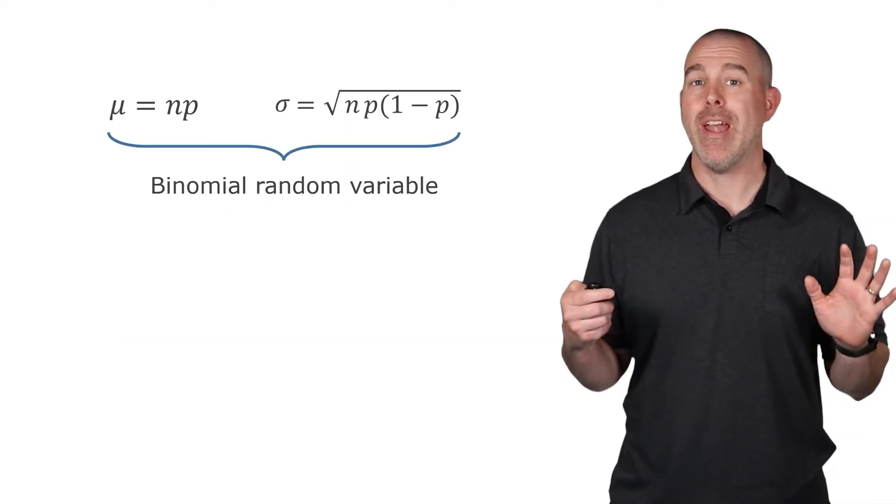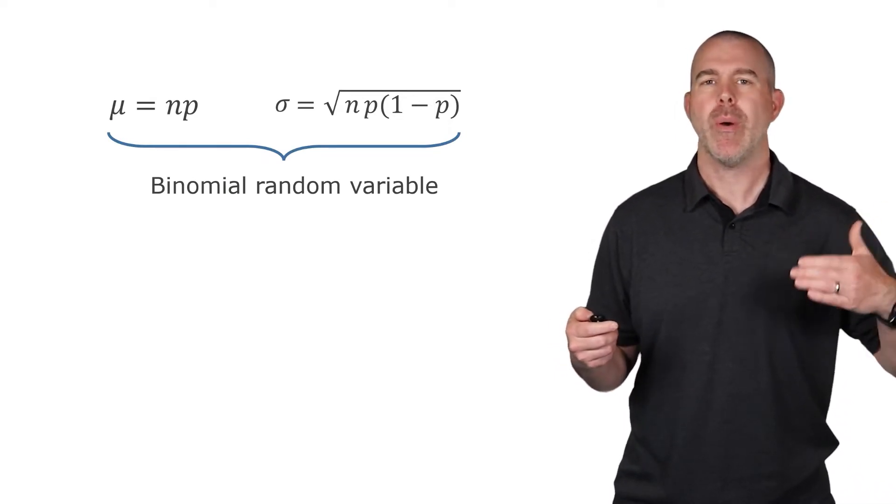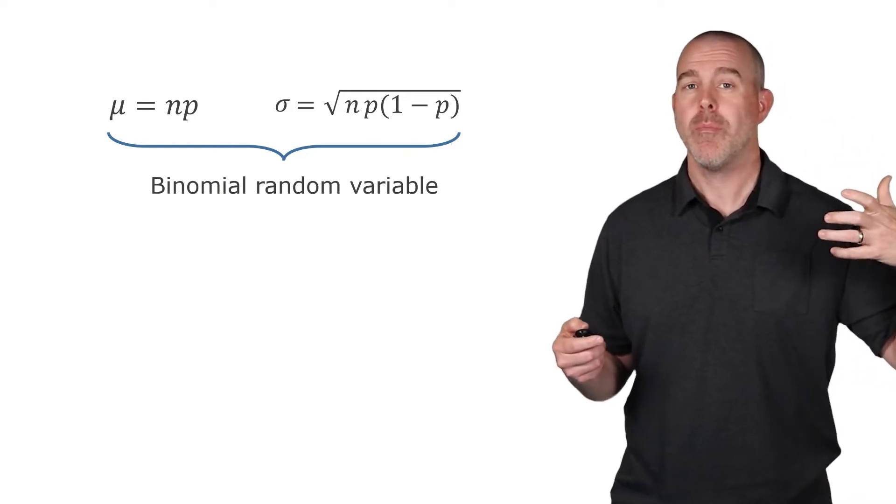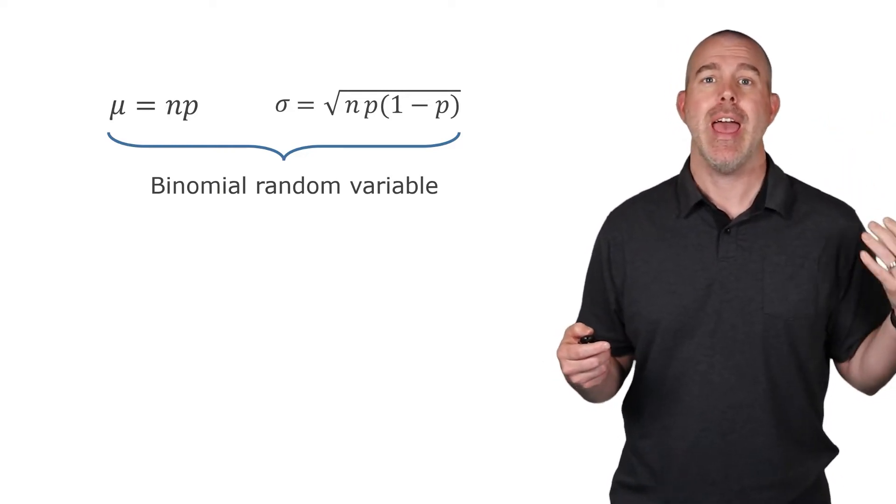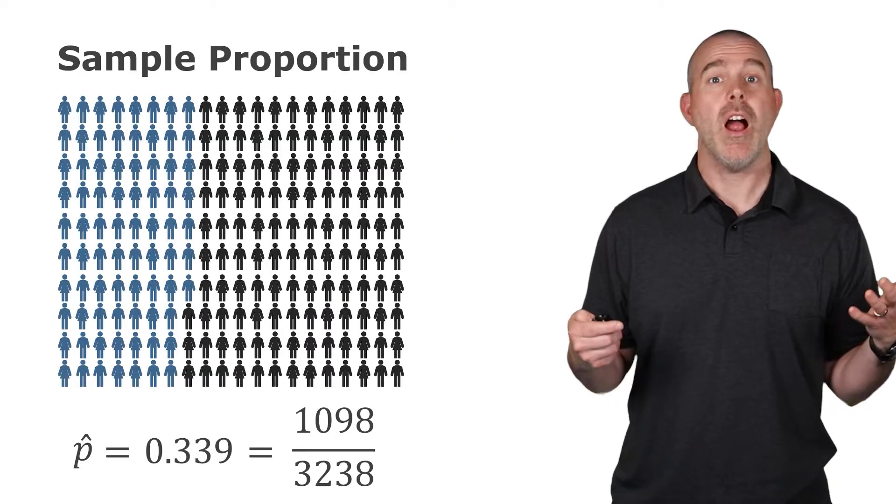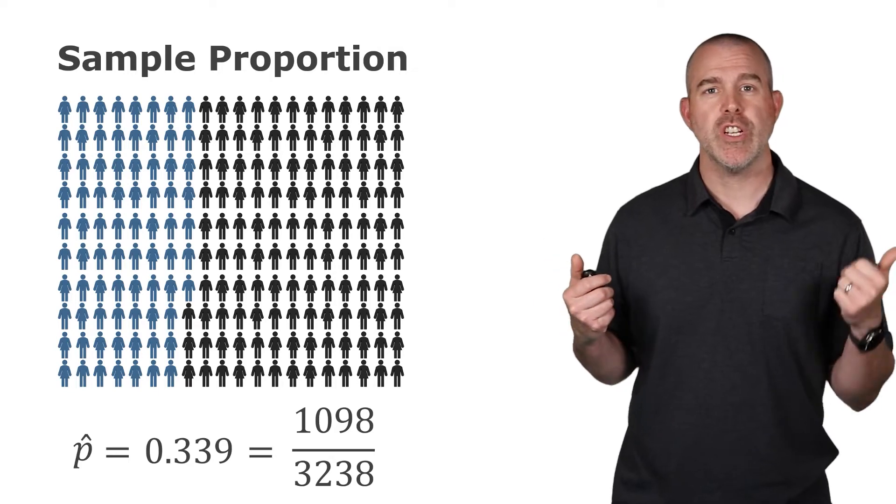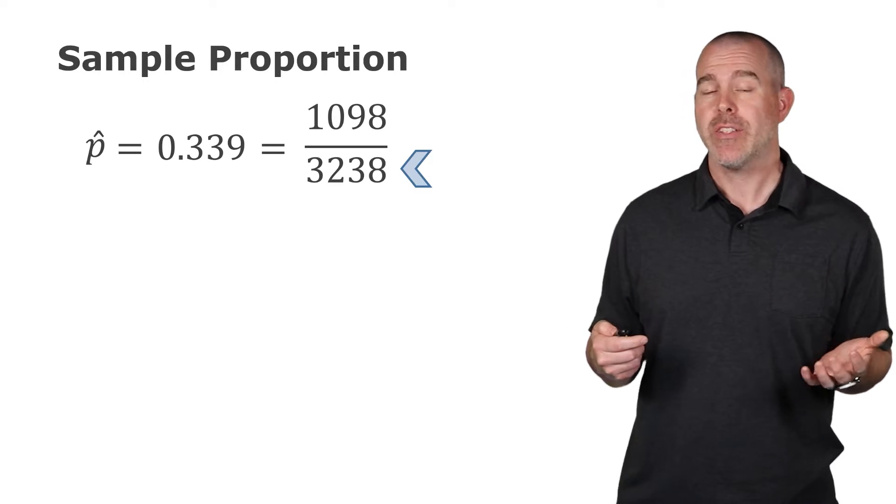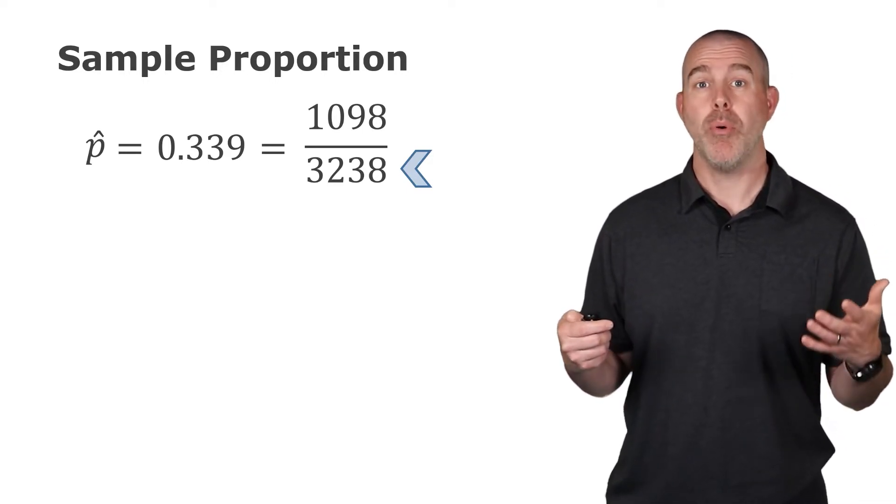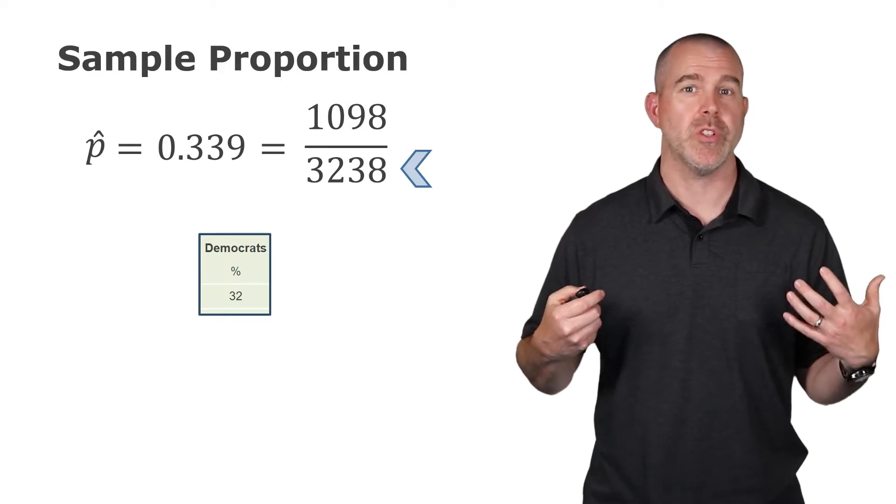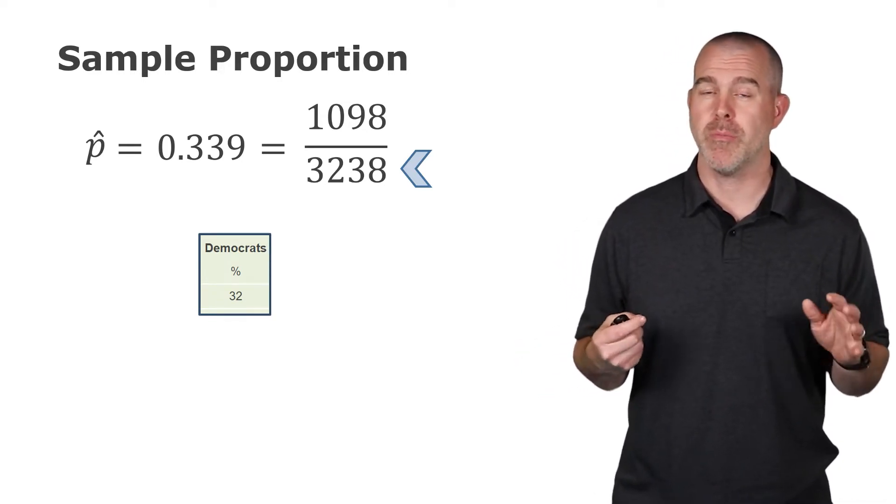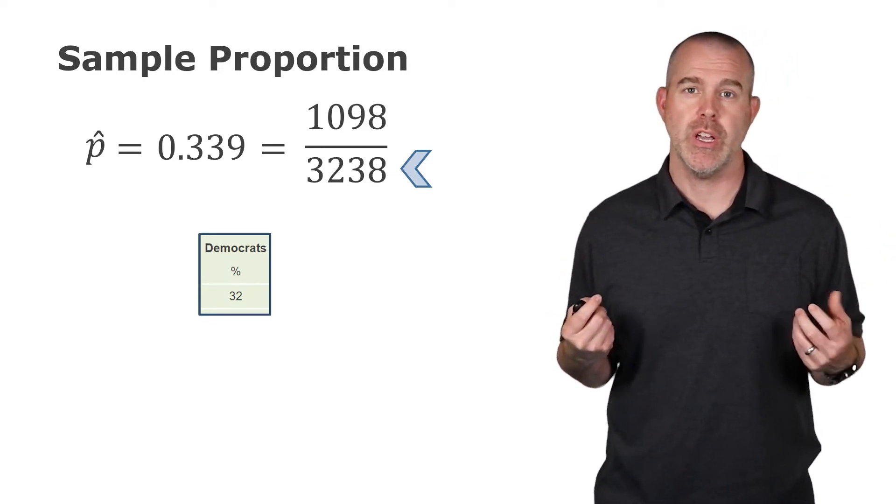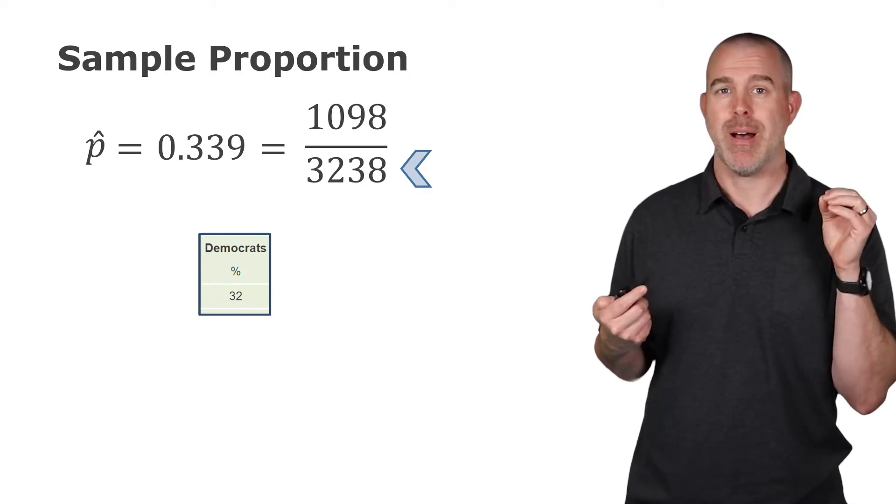Now these are for binomial random variables, but we don't have a binomial random variable. We don't have a count. We have a proportion. So we have to take those counts and the information about the counts and then divide by n to make it a proportion. When we need our n, remember this was from our sample proportion. It was 1,098 over 3,238. That 3,238, that's going to be our n that we're going to use here. The proportion that we're assuming the distribution follows is the 32%. We're wondering how our sample proportion compares to the population proportion. So we're going to use that 32% as the population proportion.